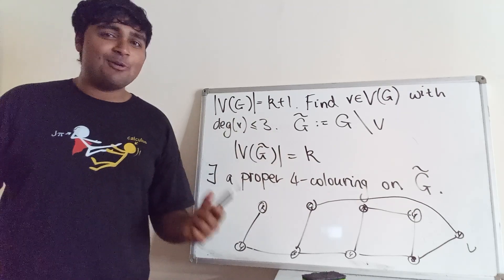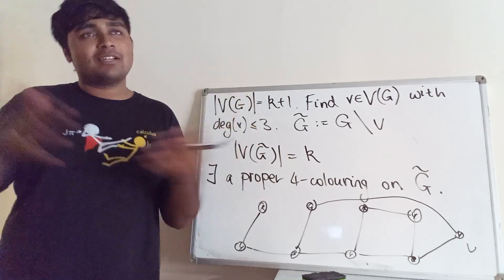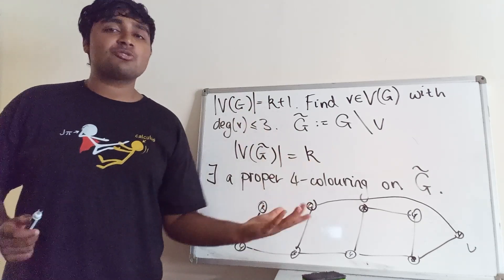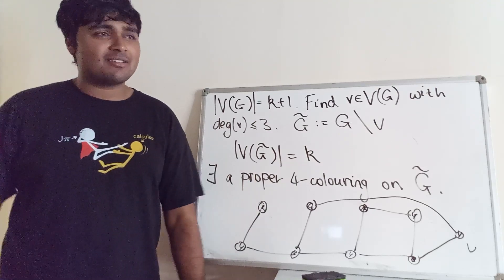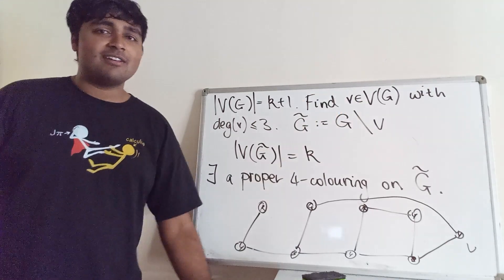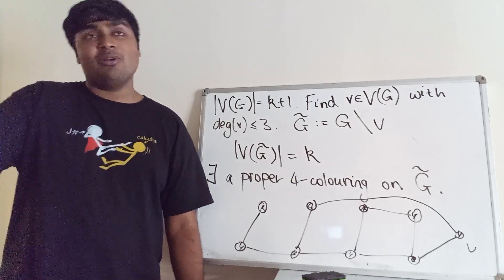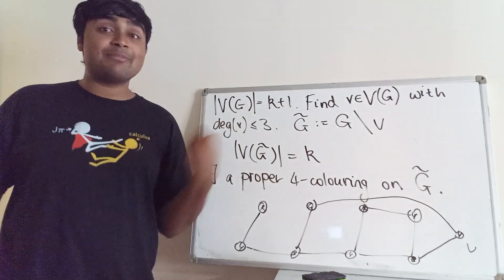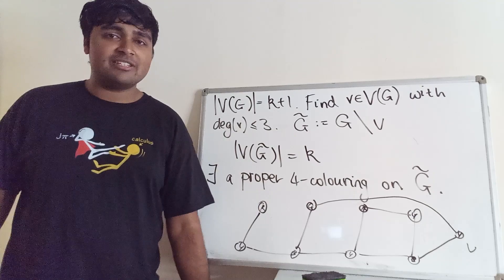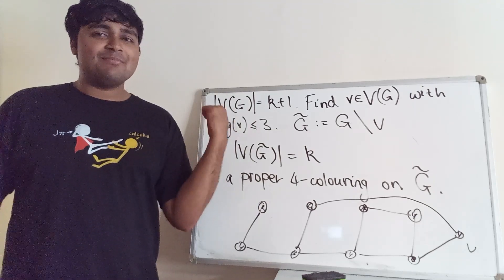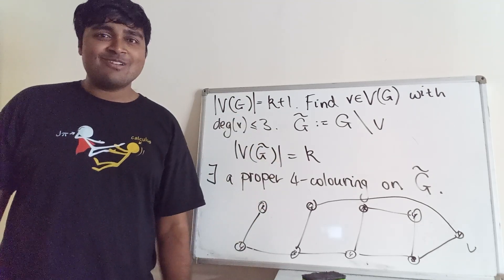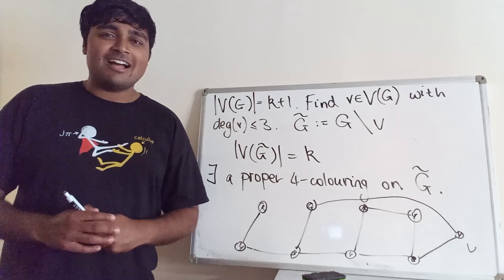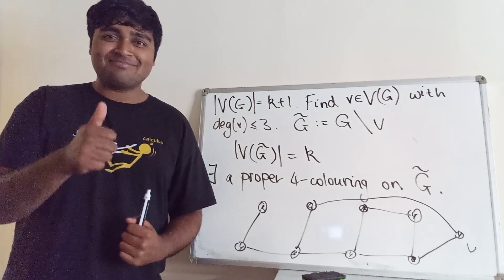This is not the complete four-colour theorem, since the full theorem applies to general planar graphs, not just triangle-free ones. The proof of the full theorem is done by reducing to many cases and testing each by computer — not super interesting. But I think this proof is a lot more interesting and doesn't require too much graph theory. Thank you so much for watching, and I'll catch you in the next one!